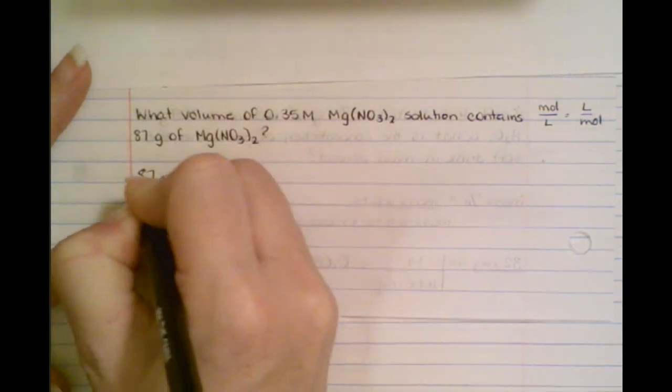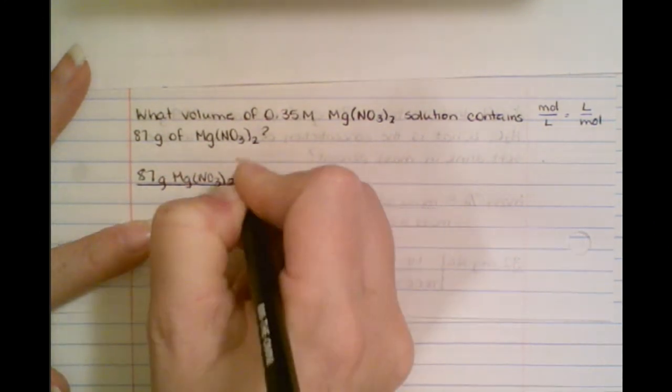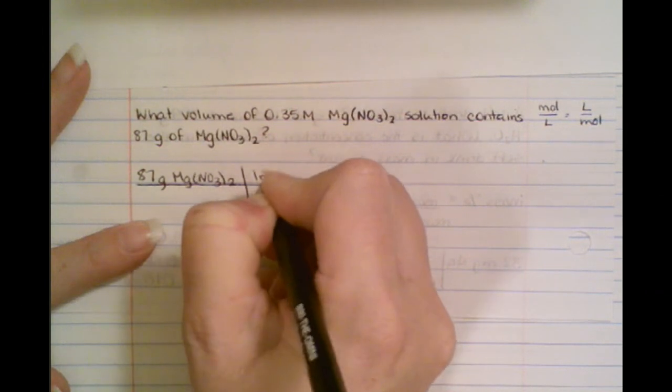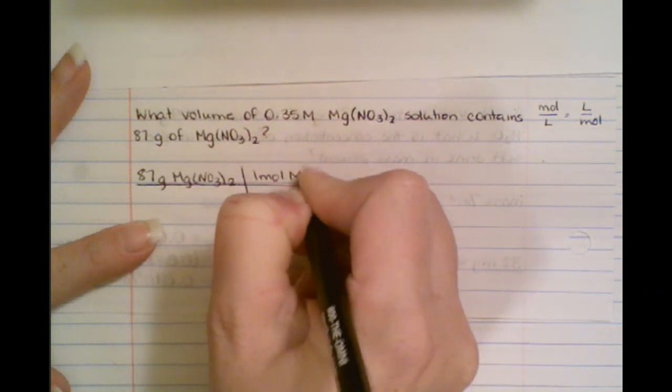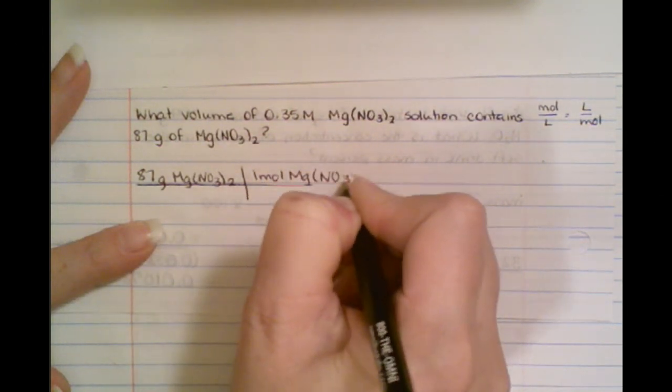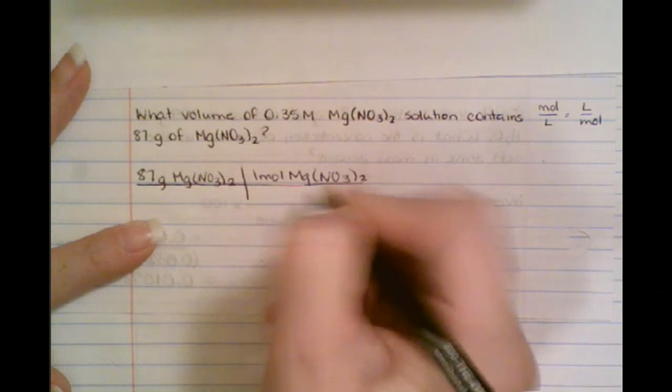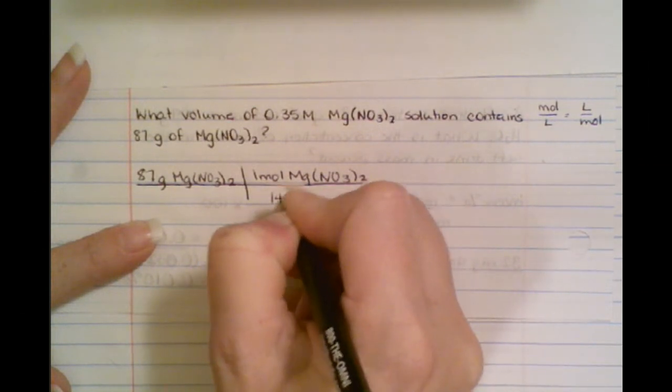So what do I have to do with this? Well, whenever you're in doubt, what do you always convert to? You convert to moles. So we want to convert to moles using the molecular weight off the periodic table. And when I add all that up, I get 148.33.